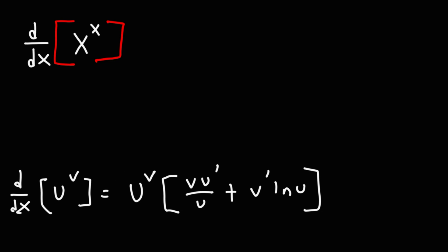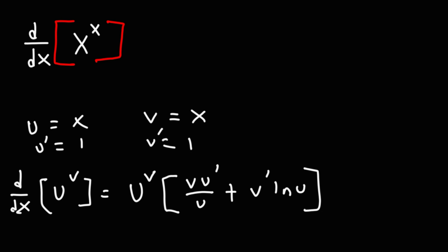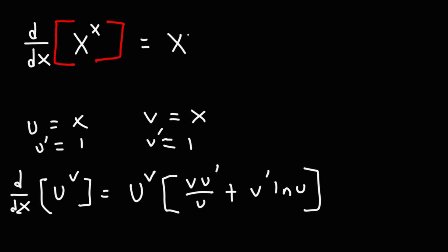So in this example, both u and v are equal to x. So u prime and v prime are both 1 in this case. So u raised to the v is going to be the same thing that we have here: x raised to the x.